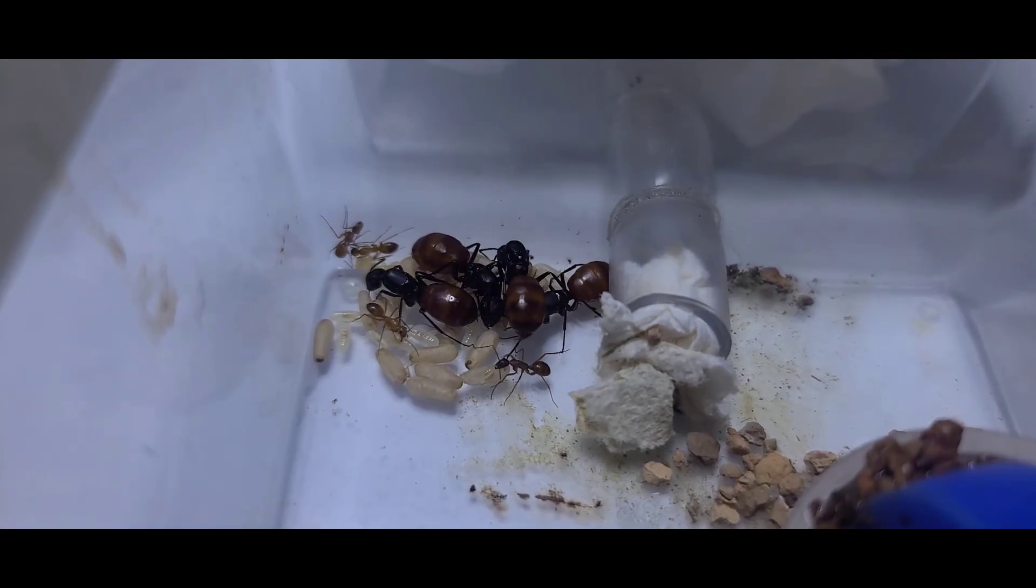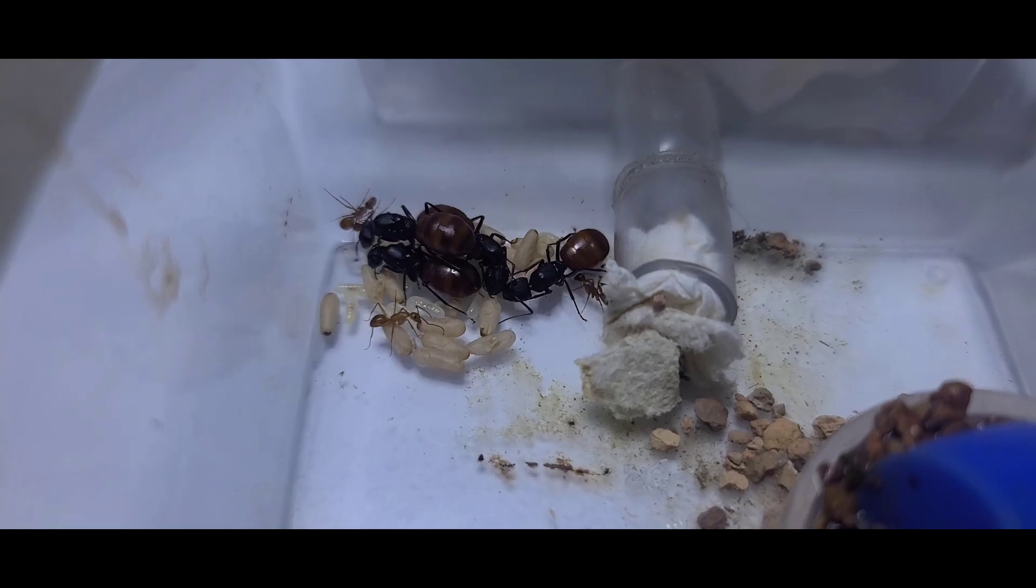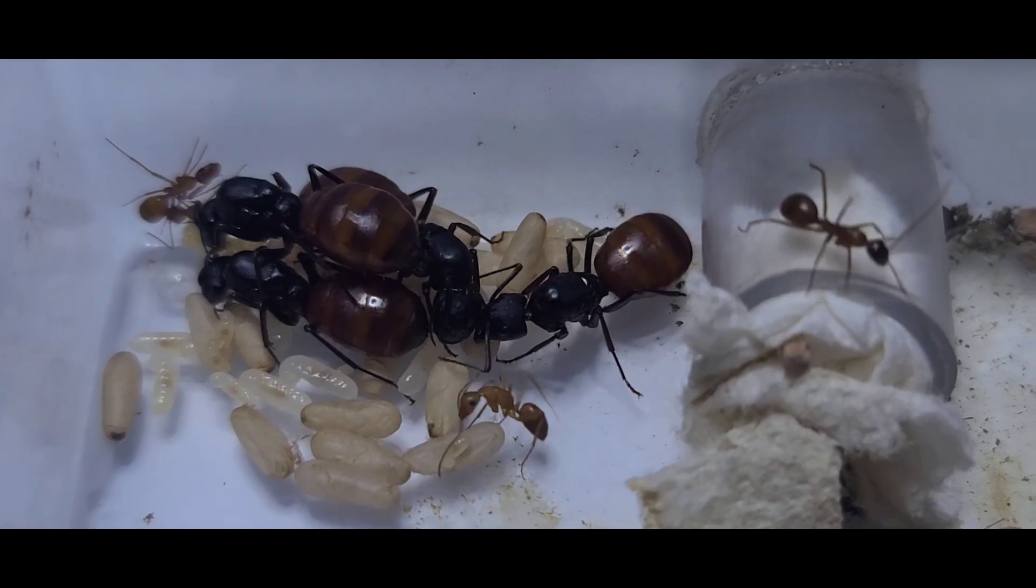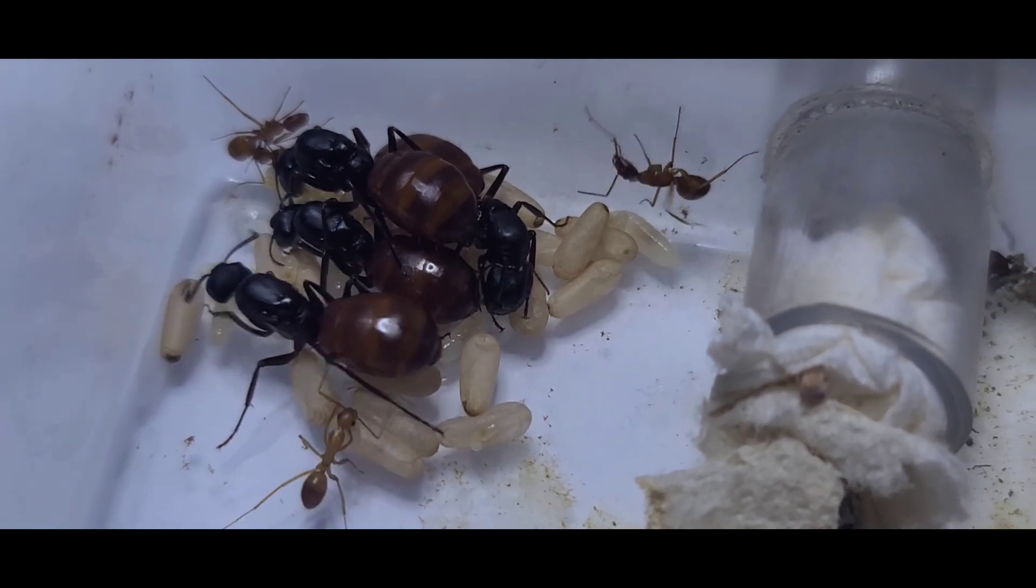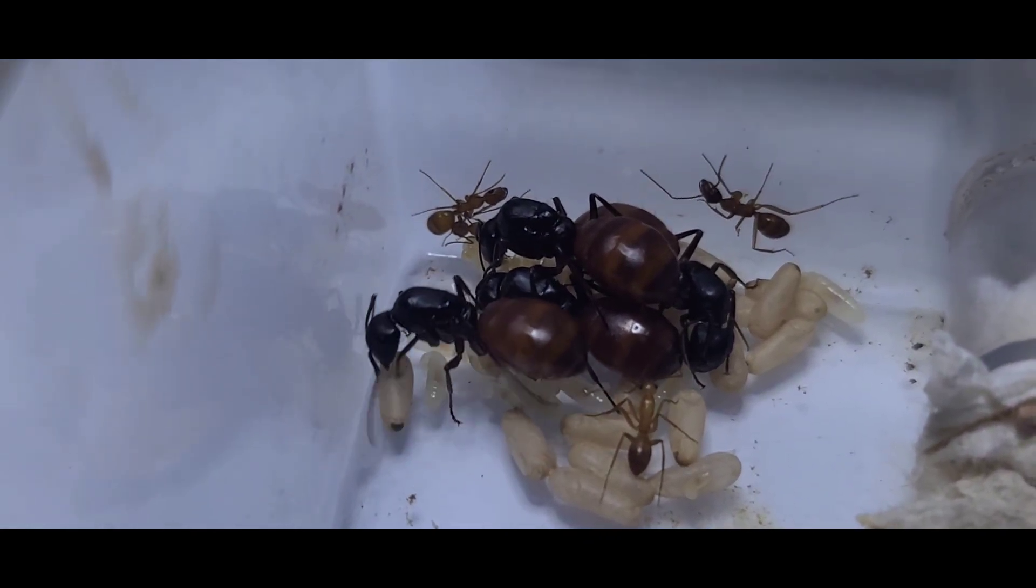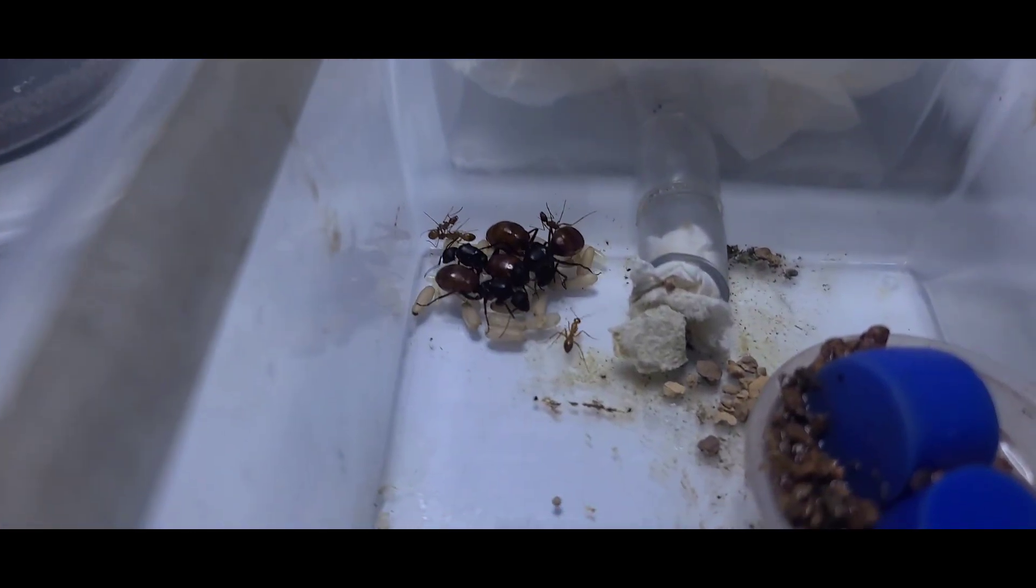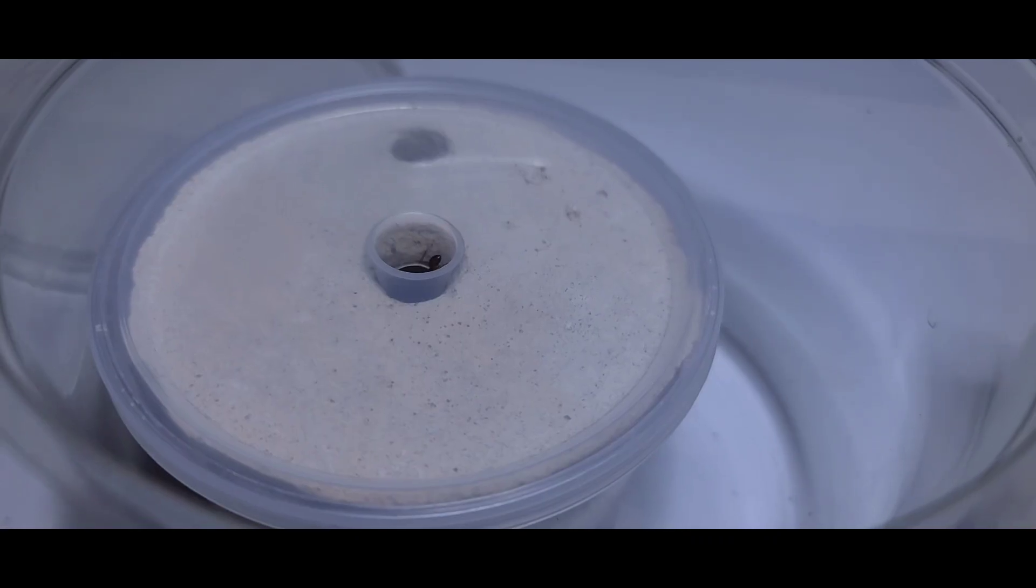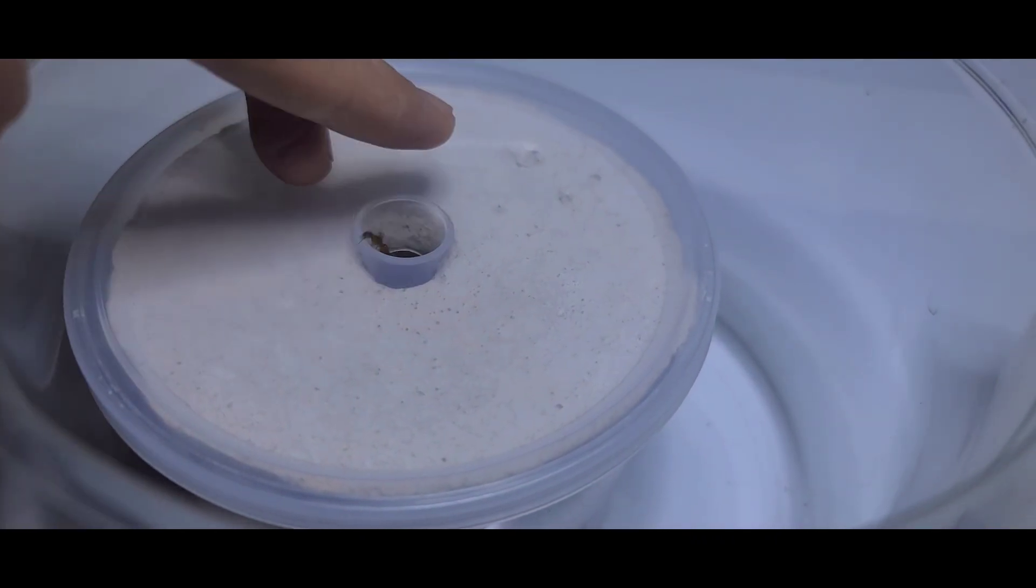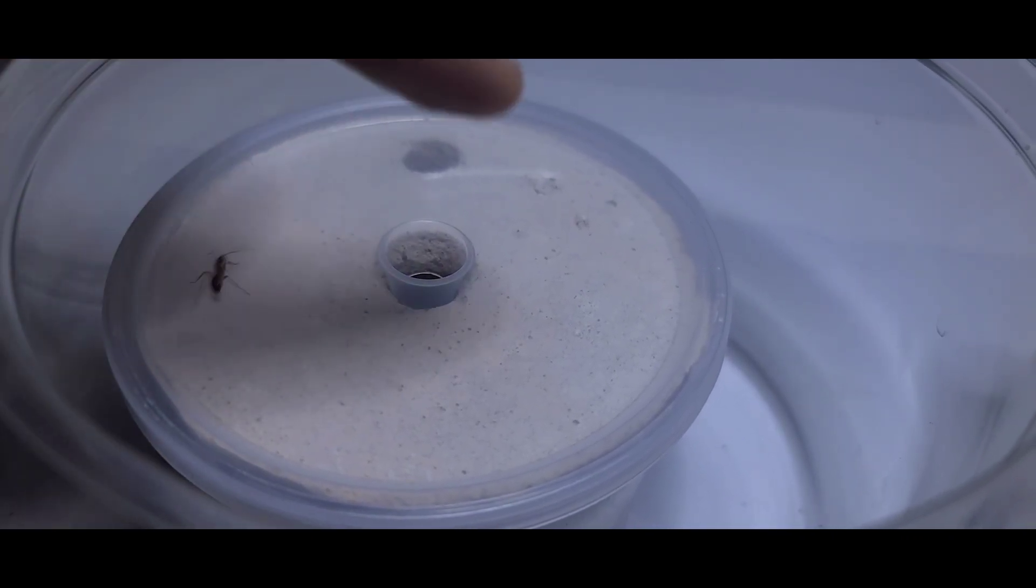On here, I have a four-queen setup with workers already emerging, as you can see. We're going to transfer them into this. I usually just let them go inside here and help them - they will eventually go here.